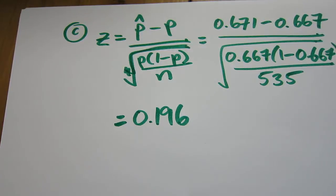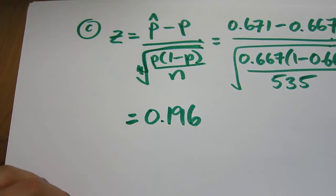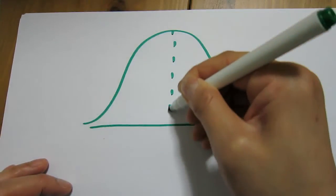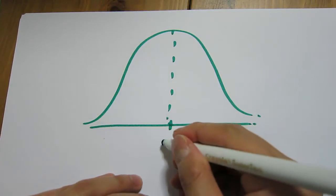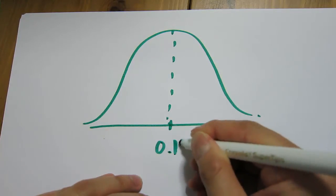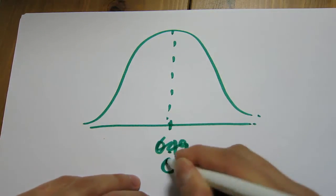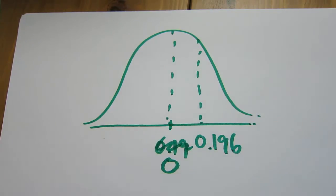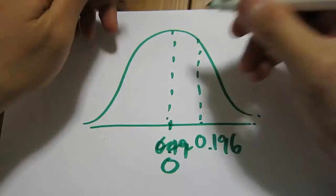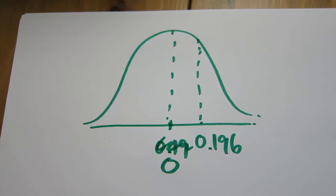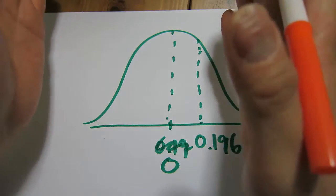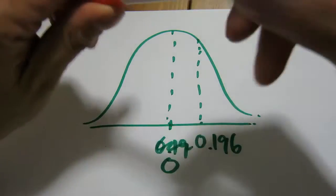The next big step is to see where this Z-score lies in our standard normal distribution. Let's draw our standard normal distribution — it's symmetrical around zero. We have 0.196 here. Now, the p-value for a two-tailed test is the shaded area of the curve towards the closest tail. Our Z-score lies here, so the shaded region is towards the closest tail.